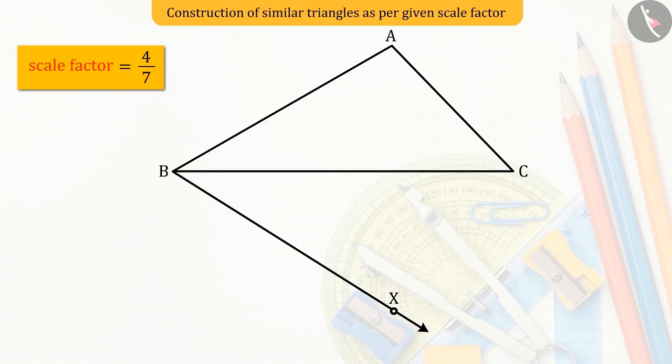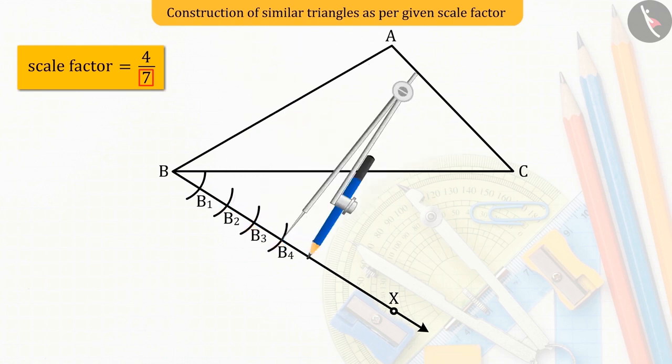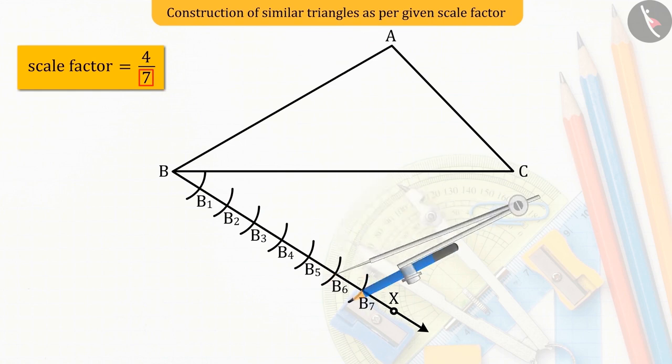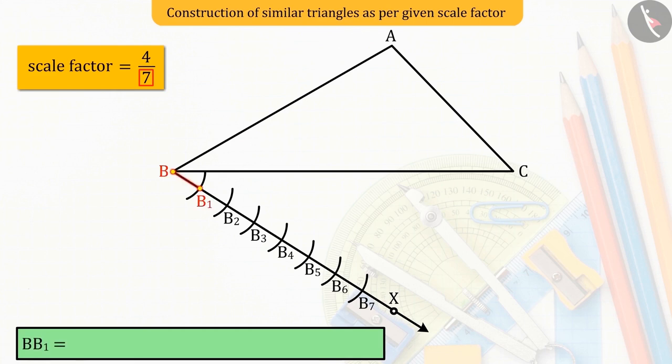Now, let's see the larger number in the scale factor, which is 7 here. So, we draw 7 arcs B1, B2, B3, B4, B5, B6, and B7 of equal radii on the ray BX, such that BB1 equals B1B2 equals B2B3 equals B3B4 equals B4B5 equals B5B6 equals B6B7.